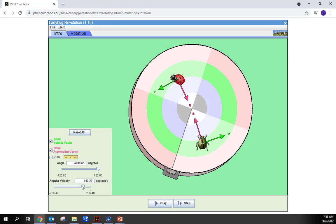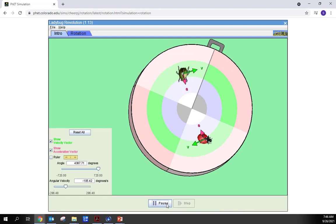If I reverse the direction of rotation, we see that the velocity now points the other direction, but the acceleration still points inward.